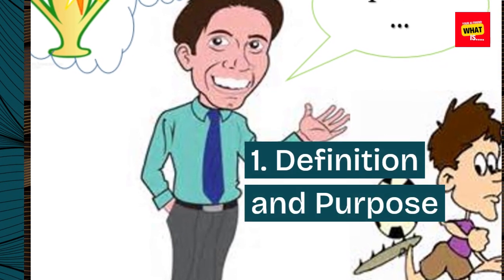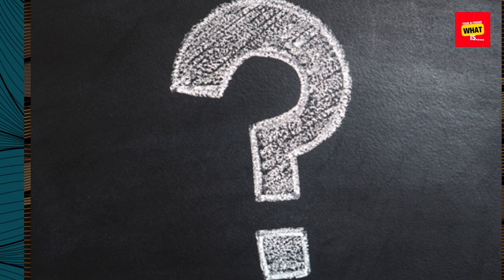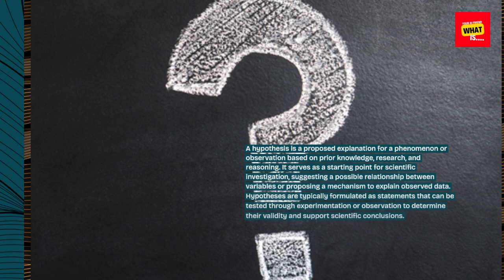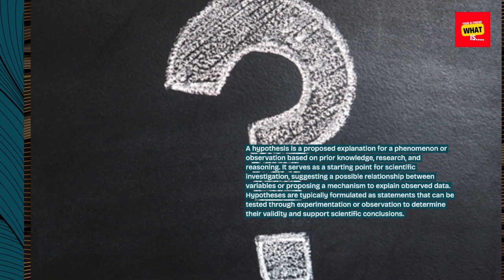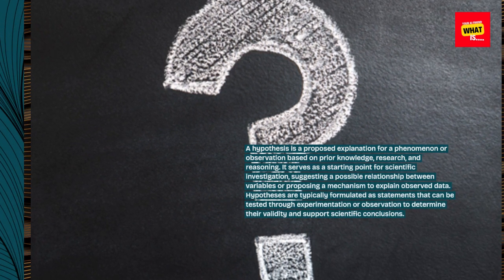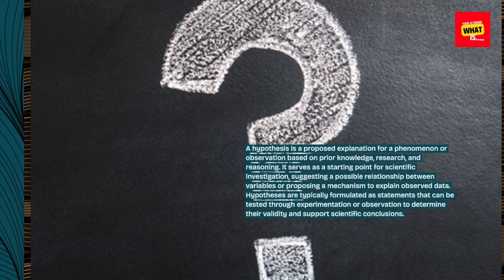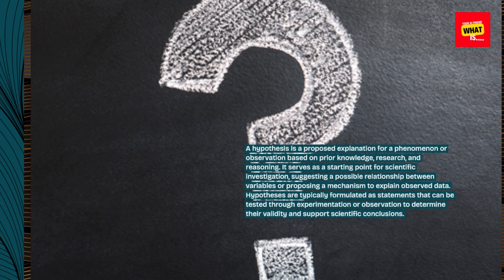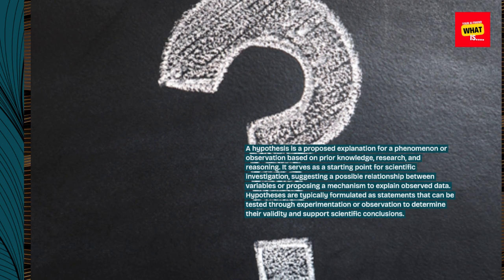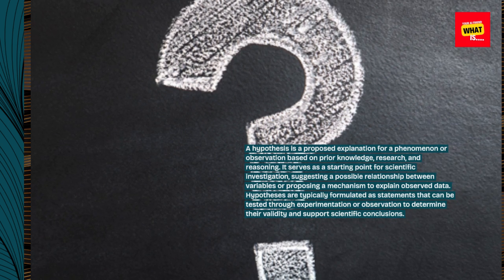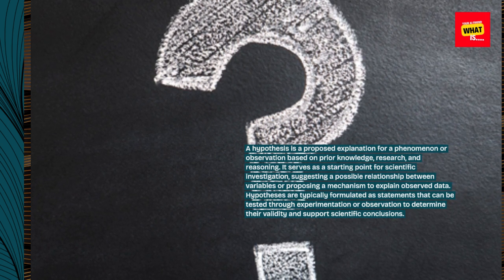1. Definition and Purpose. A hypothesis is a proposed explanation for a phenomenon or observation based on prior knowledge, research, and reasoning. It serves as a starting point for scientific investigation, suggesting a possible relationship between variables or proposing a mechanism to explain observed data. Hypotheses are typically formulated as statements that can be tested through experimentation or observation to determine their validity and support scientific conclusions.